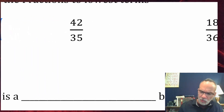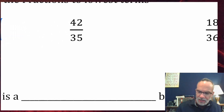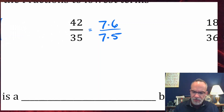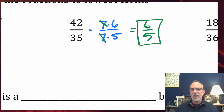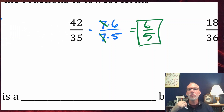What about the next method? What number can you divide 42 and 35 by? That would be 7. But instead of dividing top and bottom by 7, let me do a factoring approach: 42 is 7 times 6, and 35 is 7 times 5. The 7s cancel out because 7 divided by 7 is 1, so the answer is 6 fifths. That's how you'll reduce fractions in algebra — by factoring the top and bottom and canceling common factors.